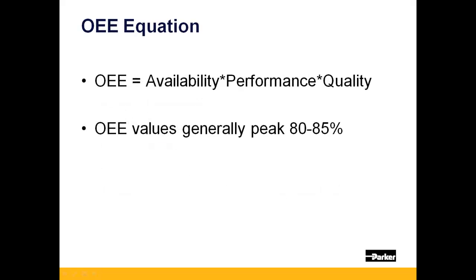Once you've developed a means of calculating each of these metrics which apply to your processes, OEE is simply calculated by multiplying these three metrics together to arrive at a final percentage. Typical OEE values vary and generally do not exceed 80 to 85%.